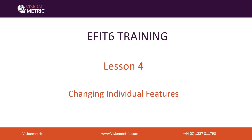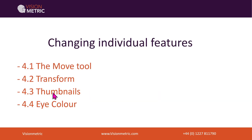In this lesson we're going to learn some simple and effective ways of changing and transforming the individual features within eFit6. The lesson is divided into four sections. We'll start with the move tool which changes the position and shape of the features using geometrical transformations. The second section will look at the transform tool which changes shape using labelled slider controls. We'll then look at the thumbnails tool which replaces an entire feature with a new example, and finally we'll look at the eye colour tool for changing the colour tone and appearance of the eyes.